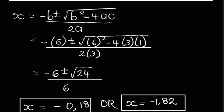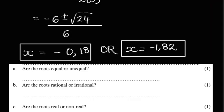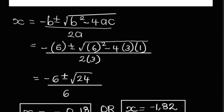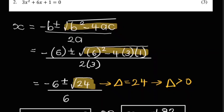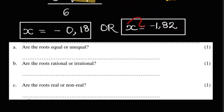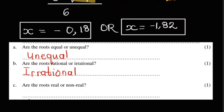We can now go on to the subsequent questions for equation 2. To answer these, we identify the discriminant — b² - 4ac. From our substitution, the discriminant equals 24, which is greater than zero. Are the roots equal or unequal? Clearly they are unequal — they are not the same value. Are the roots rational or irrational? We did not get fraction answers for equation 2, meaning they are irrational. Are the roots real or non-real? They are real — they do exist.